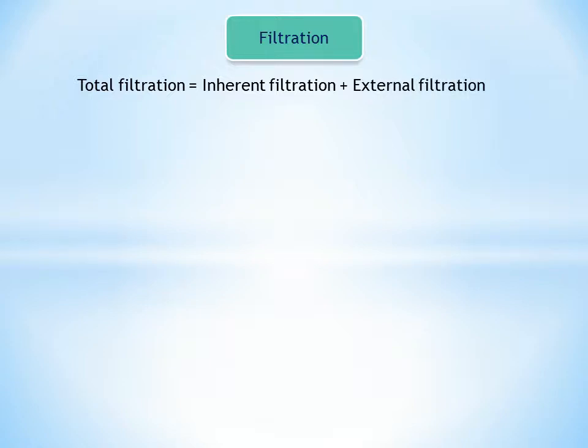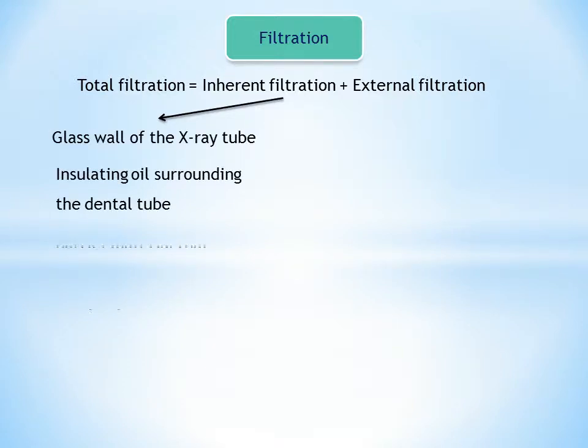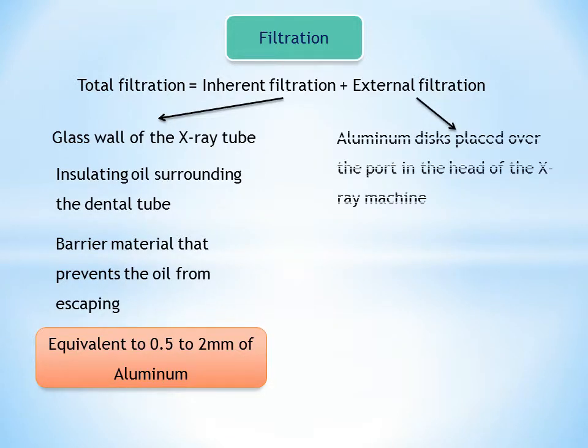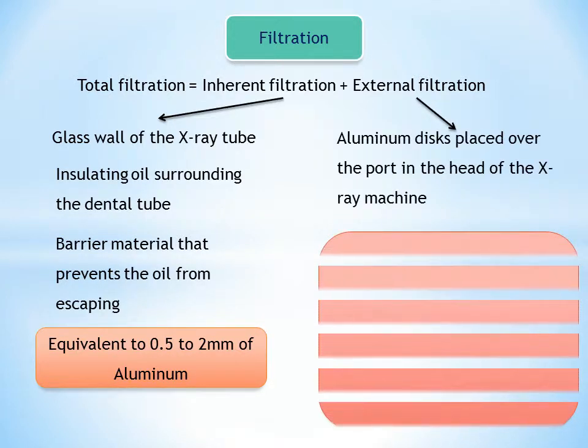Total filtration is the sum of the inherent filtration plus any added external filtration. Inherent filtration consists of the materials that X-ray photons encounter as they travel from the focal spot on the target to form the usable beam outside the tube enclosure. These materials include the glass wall of the X-ray tube, the insulating oil that surrounds many dental tubes and the barrier material that prevents the oil from escaping through the X-ray port.